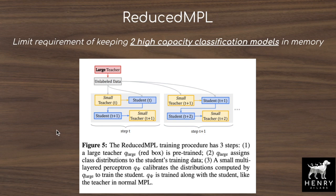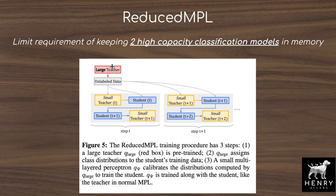To address the memory bottleneck of keeping two high-capacity models in memory simultaneously, the authors propose a reduced MPL framework. A large teacher network is first trained on labeled data to produce a distribution on unlabeled data, and then replaced with a smaller teacher network — such as a multi-layer perceptron — that adjusts this initial distribution. The smaller teacher has sufficient capacity to adapt during meta-learning while reducing memory requirements.